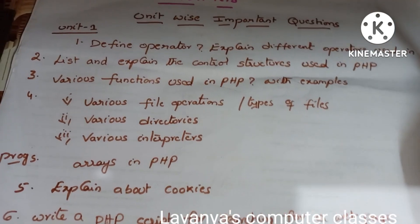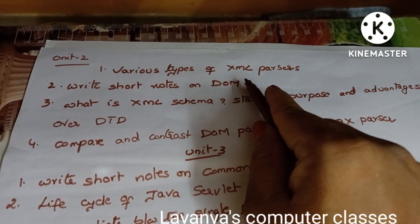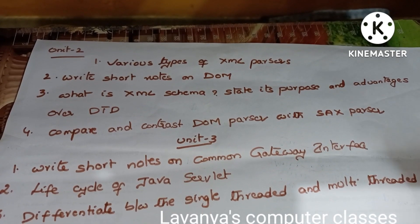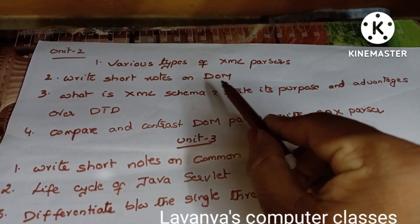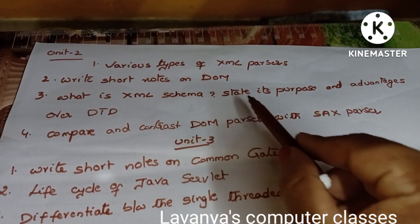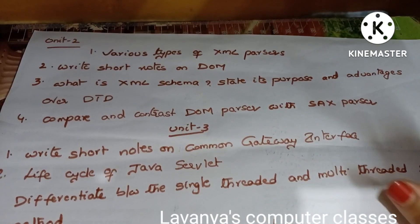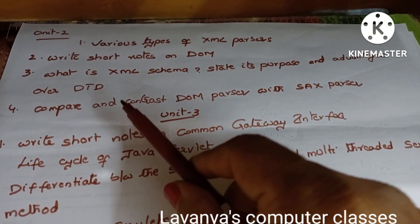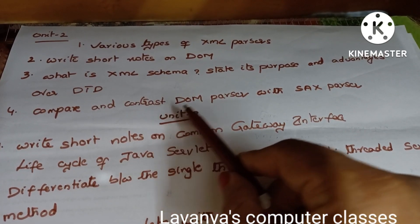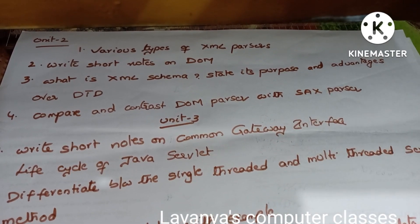These are the important questions in unit 1. Unit 2 important questions are: explain various types of XML parsers - important question - and write short notes on common gateway interface and DOM document object model. Next, what is XML schema, state its purpose and advantages over DTD - all these are very very important questions. Compare and contrast DOM parser with SAX parser.